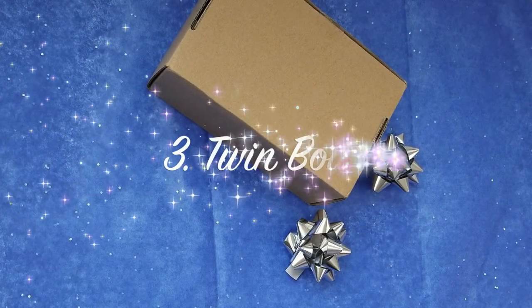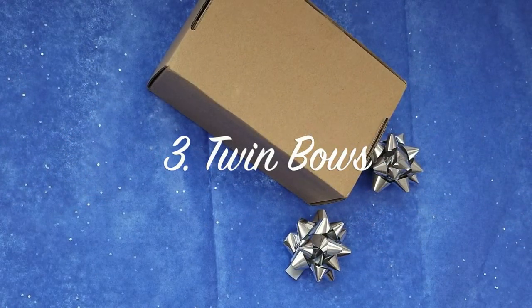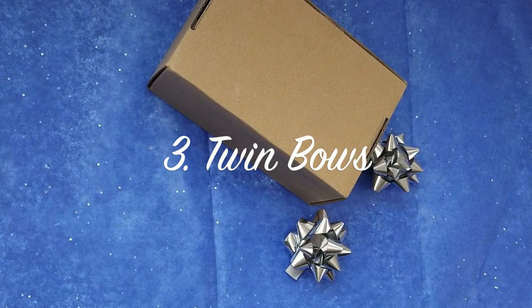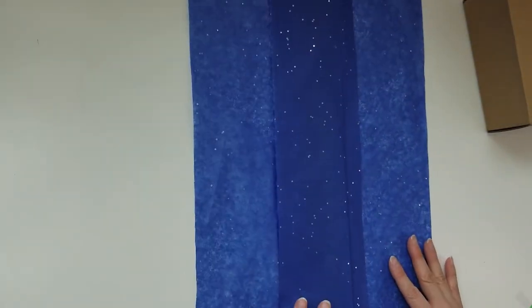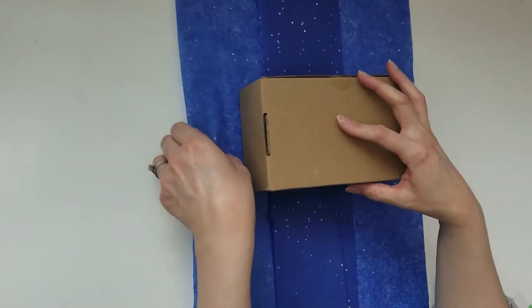Next up we have the twin bows method, which is very similar to the previous one. But in this one you need a box and two bows. Just like the previous one we're going to be working with two equal size pieces of paper.